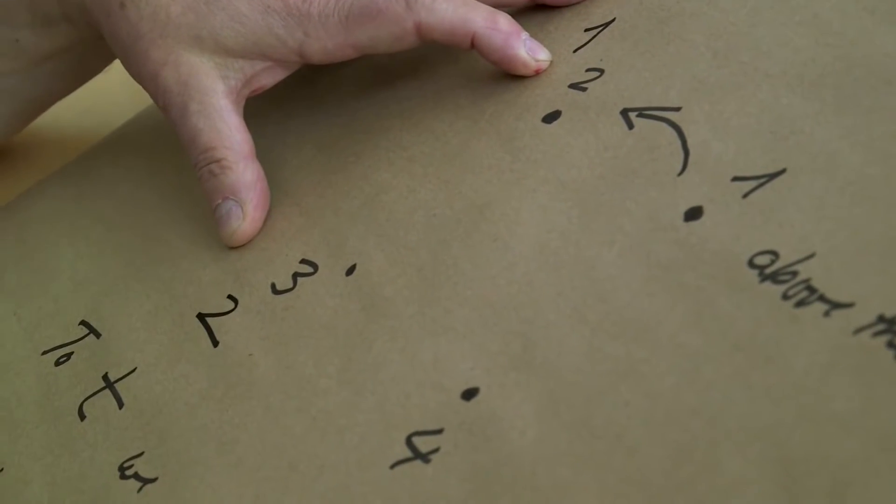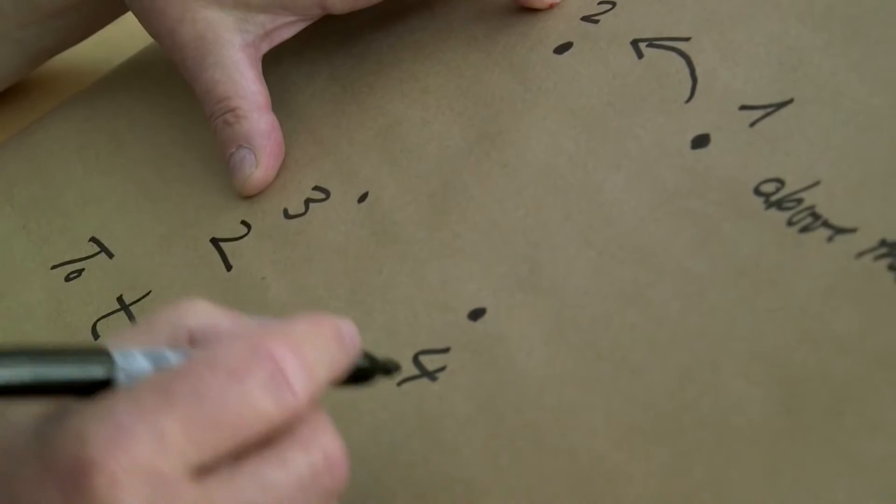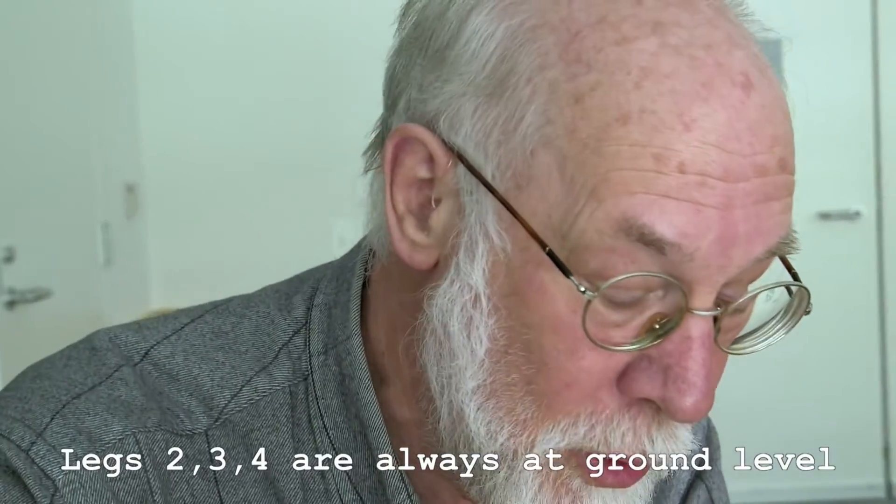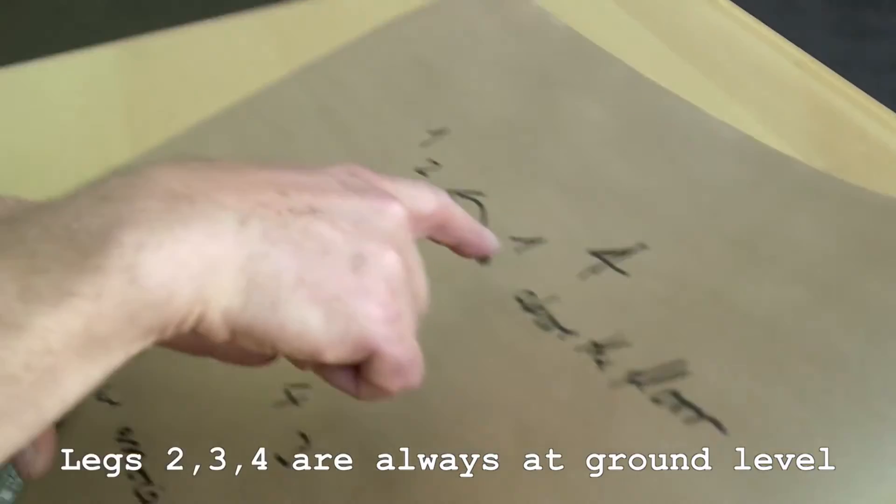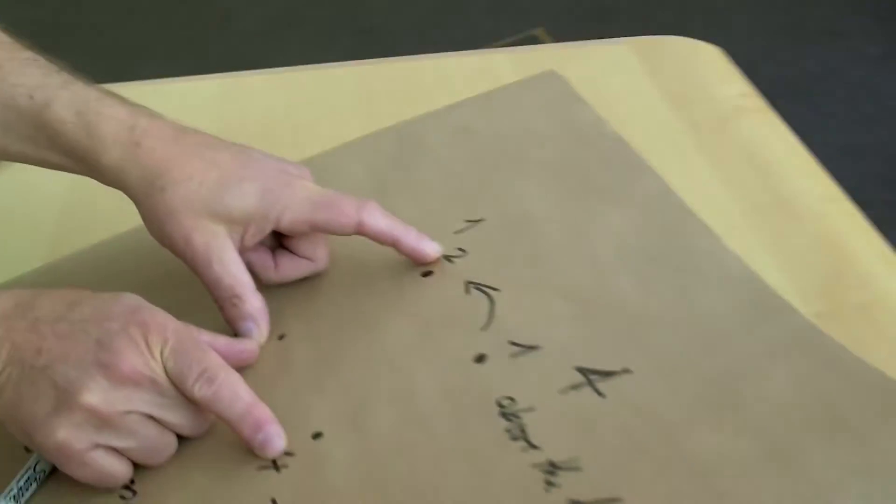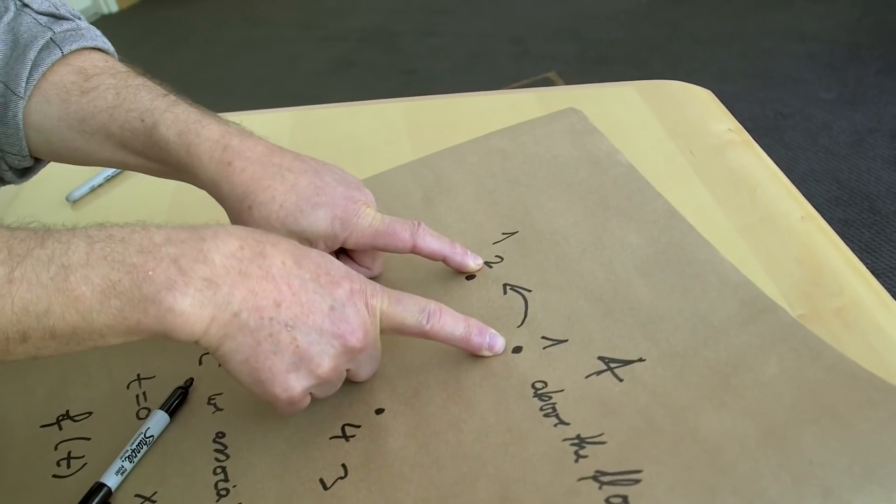Leg two to the position of leg three. Leg three to the position of four. And leg four is at the position where leg one was. But now we remember that we fix the position of two, three and four. I fix them on the ground. I keep them on the ground. And since when we did it here, we had in this position, this was above the ground.